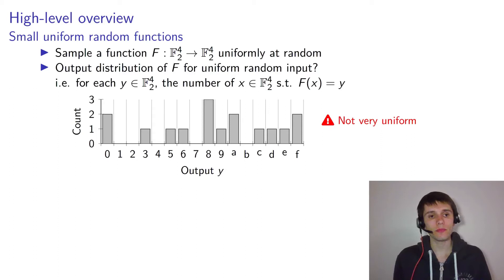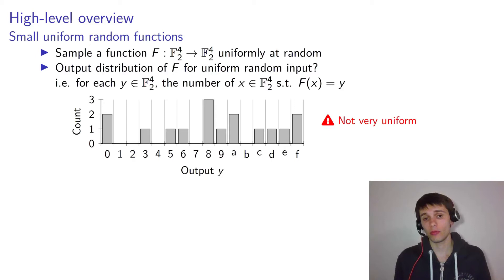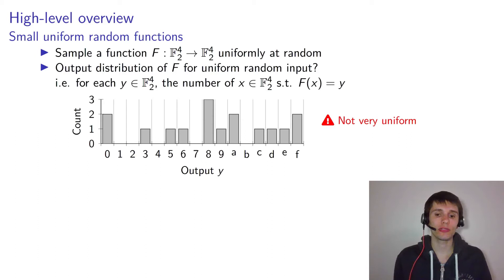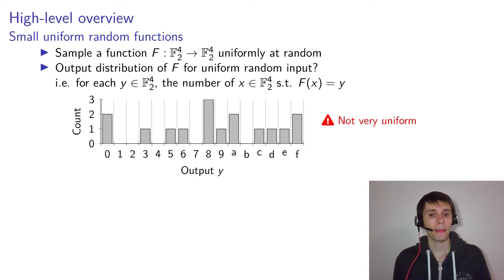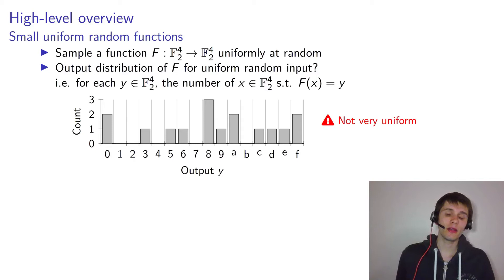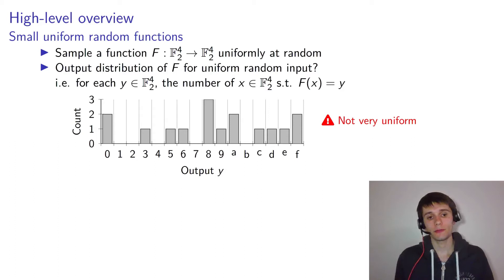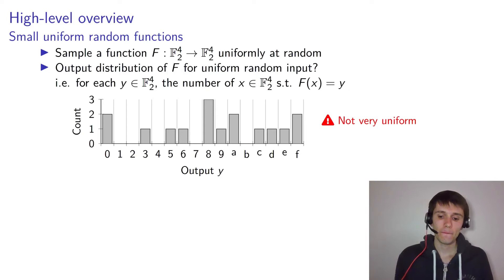One of the basic properties the attack relies on is a property of small uniform random functions. Suppose you sample uniformly at random a function which takes 4 bits to 4 bits, from the set of all such functions. You then look at the output distribution — that is, for each output, how many inputs map to that particular output. I went ahead and created a histogram. This output distribution doesn't look very uniform at all. For large functions this would be close to uniform, but for small functions it typically isn't because there's a lot of variance.